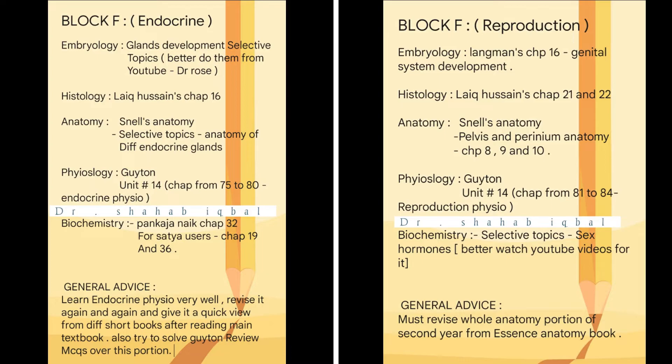Now we are left with Block F, which also contains two modules: the endocrine module and the reproduction module. Take a snapshot here and follow the on-screen guidelines from the toppers. For Block F anatomy — endocrine and reproduction — the mostly used and preferred book is Snell with Netter Atlas. If you want to be a topper or are more interested, you can also go through Gray's Anatomy for diagrams. For lectures, go through Dr. Adil Banduk's videos on YouTube and Canhub for anatomy.